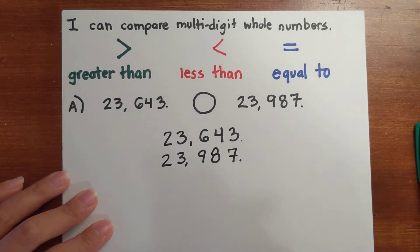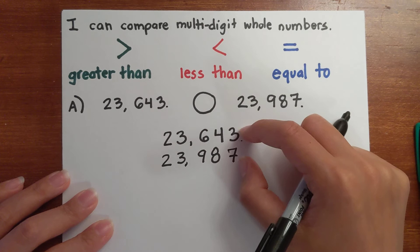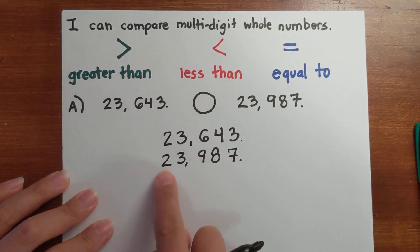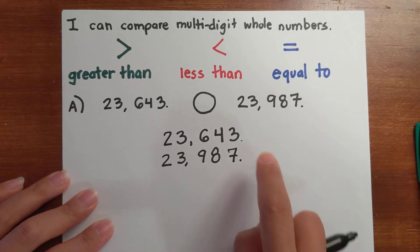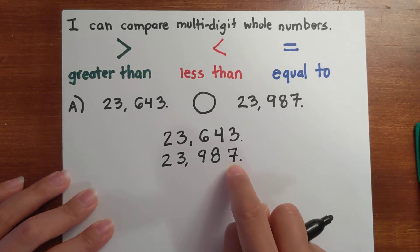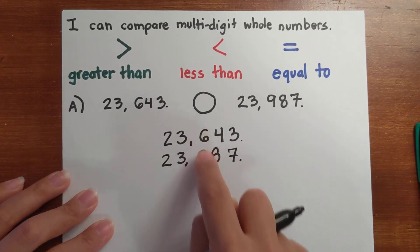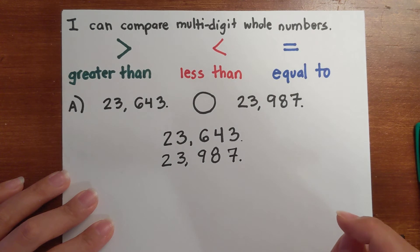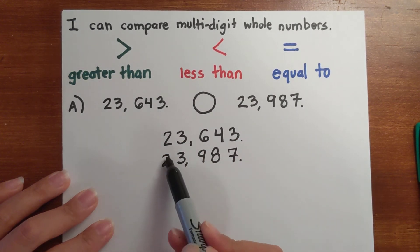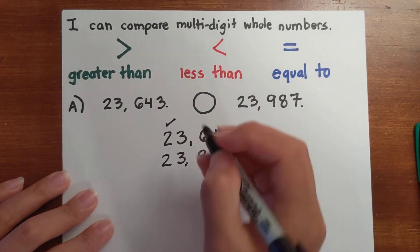So now I can compare place value by place value. When you compare place values, you always want to look at your greater values first, because even though there might be a difference in the smaller values, you always want to start with the greater values. Let's look at the ten-thousands: two and two, the same? Yes, they are, so far equal. What about the thousands: three and three, the same? Yes, so far they're equal.